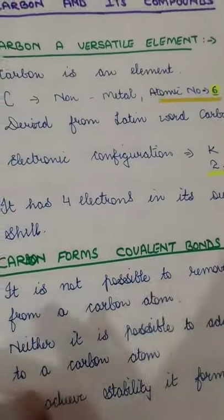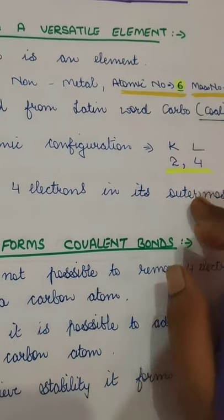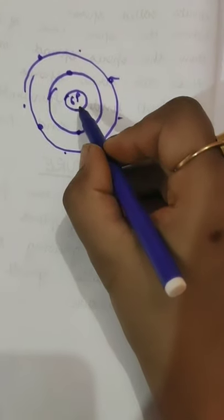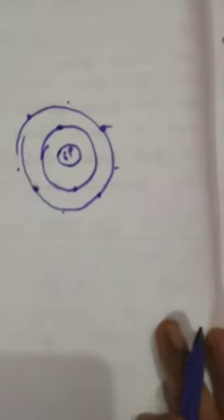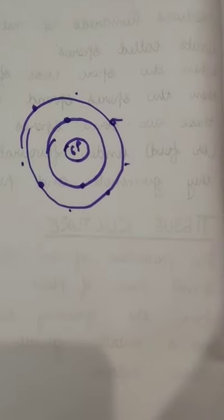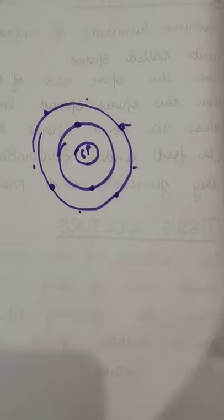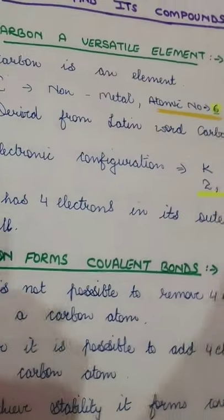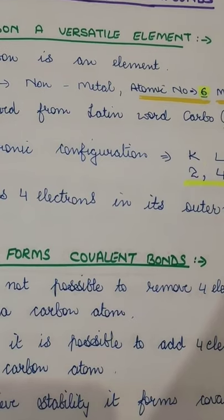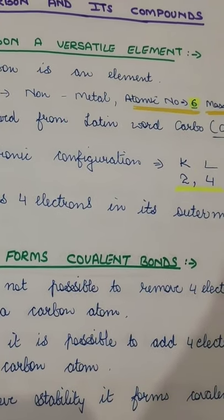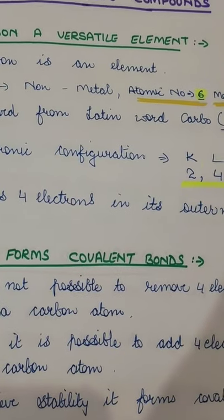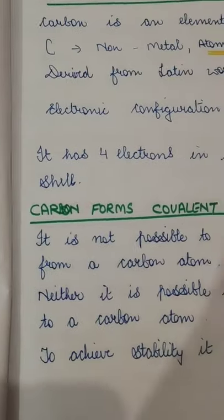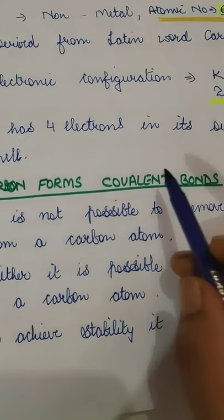It is not possible for carbon to gain four electrons. What if it tries to lose its four electrons? Since the nucleus has a positive charge, that positive charge will not allow the four electrons to move out — the six protons hold them. And if it loses all four, it cannot hold just two electrons either. So losing and gaining electrons is not possible for carbon. It cannot form either a positive ion (cation) or a negative ion (anion).